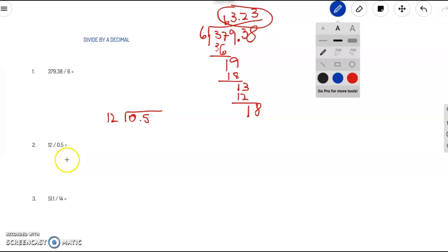Now let's look at number 2. Number 2 is different because we are actually dealing with a decimal divisor. Remember, when you are dealing with a divisor that is a decimal, you are going to try to turn it into a whole number. So how many times can we move this decimal on the right to turn 0.5 into a whole number? Well, if we move it one time, 0.5 becomes just 5.